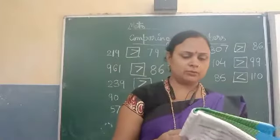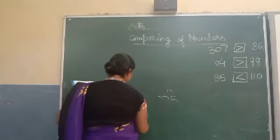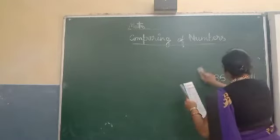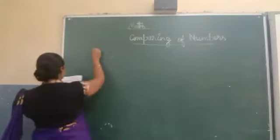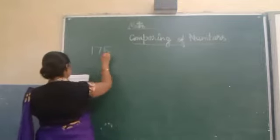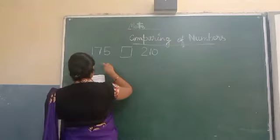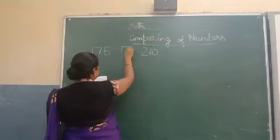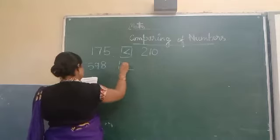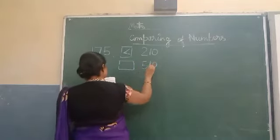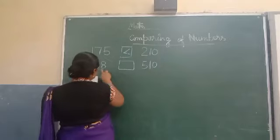Where you can put equal to, I am giving you some examples. Here is 175 and 210 — so 175 is less than 210, put less than here. Next, 510 and 598 — 510 is less than 598, so the greatest number is 598.